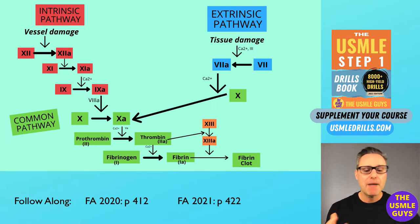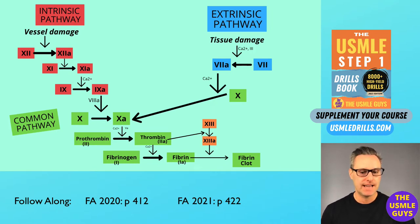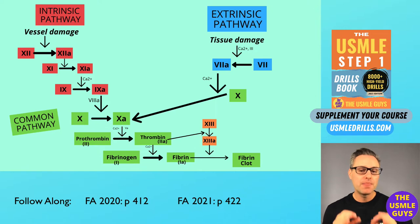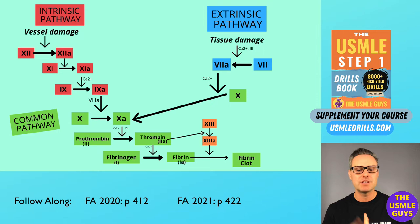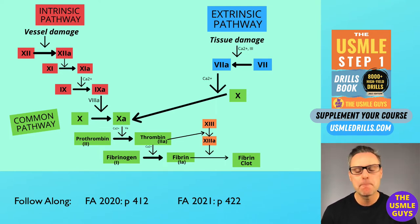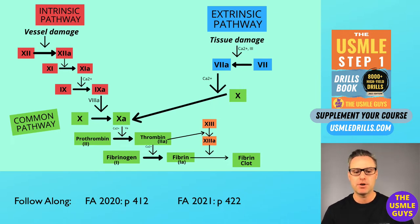Heparin produces its effects by inactivating thrombin and activated factor 10. Heparin binds reversibly to AT3, leading to inactivation of factors 2A and 10A. This complex of heparin with AT3 is also able to inactivate factors 9, 11, 12, and plasmin. Heparin binds to antithrombin through high-affinity pentasaccharides — don't forget that antithrombin is a serine protease inhibitor.